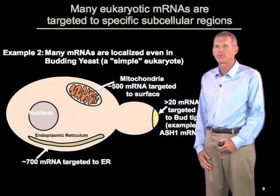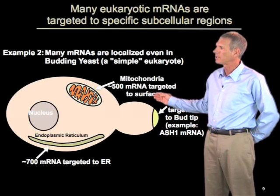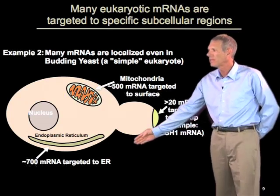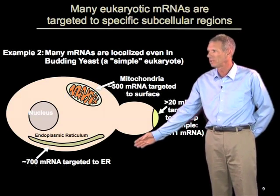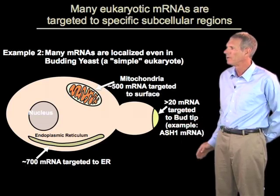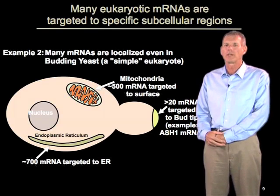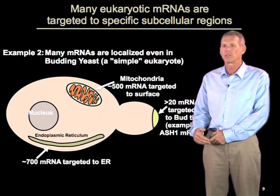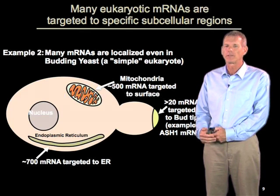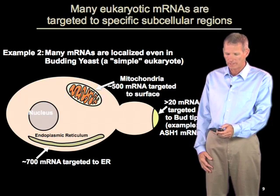This is true even in very simple cells. For example, if we look at a yeast cell, which is considered a relatively simple eukaryotic cell, we know that about 500 mRNAs are targeted to the surface of the mitochondria, another 700 or so are targeted to the surface of the ER, and about 20 are targeted to the very tip of the growing cell, the so-called bud tip. So even in this organism, looking at just a few compartments, we know of over 1,000 mRNAs which are targeted to specific regions. The conclusion is that there is extensive localization of mRNAs in eukaryotic cells, and the mechanisms and specificity involved are an important part of the control of mRNA in eukaryotic cells.